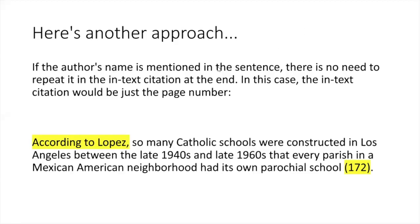I could have taken a different approach, including the author's name in the sentence itself. Here's how that might read: According to Lopez, so many Catholic schools were constructed in Los Angeles between the late 1940s and late 1960s that every parish in a Mexican-American neighborhood had its own parochial school. In this case, it's not necessary to include the author's last name in the in-text citation because I've already included it in the sentence. So the in-text citation here is only the page number 172. Before I turn this paper in, I would need to make sure that a detailed citation for this article appears on my Works Cited page as well.